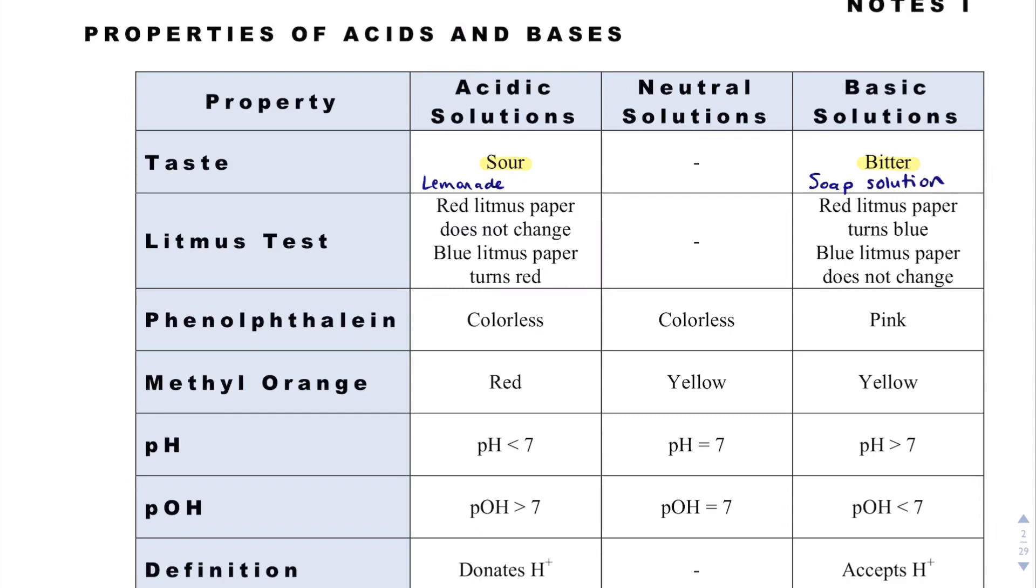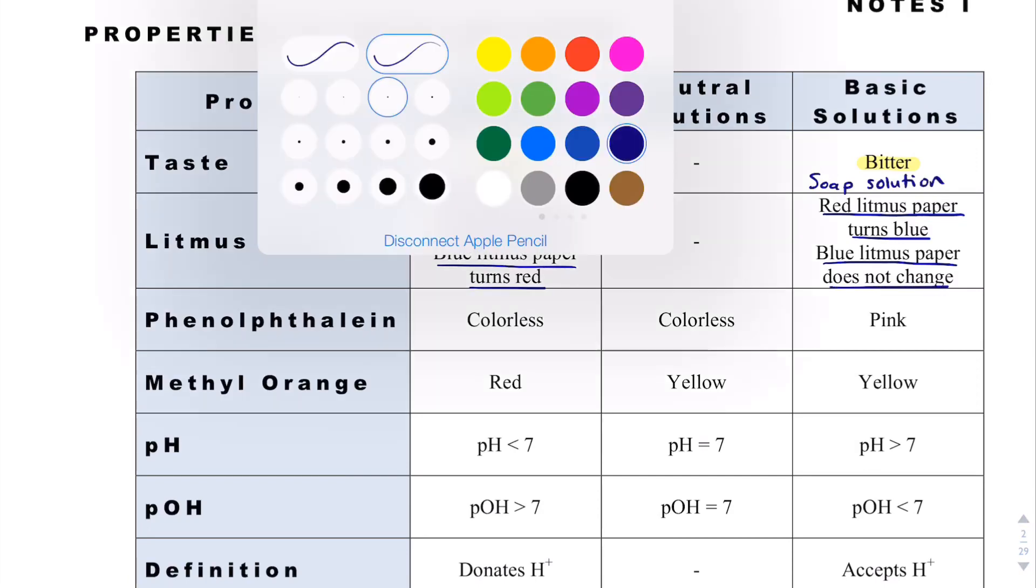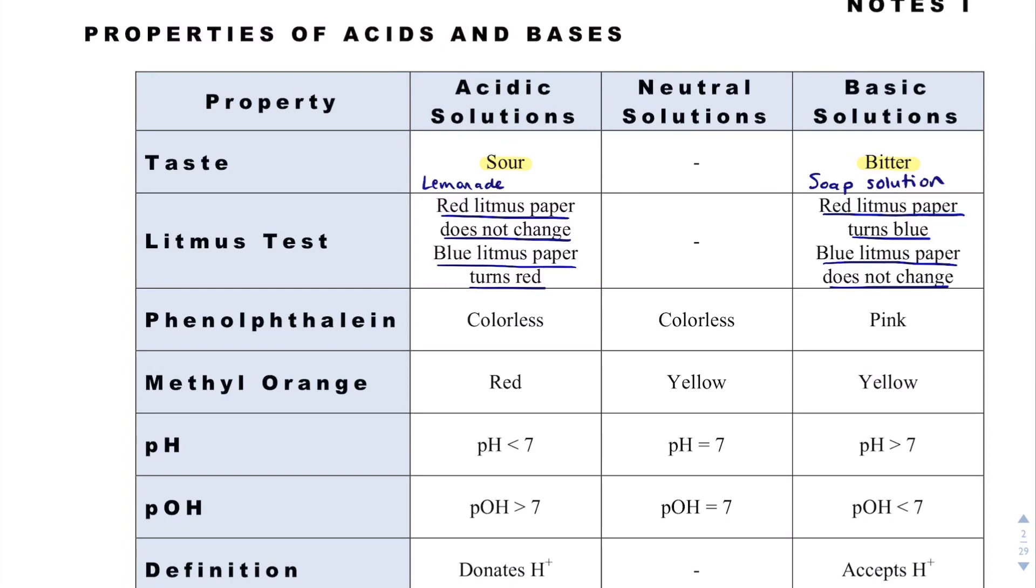With a litmus test, red litmus paper will not change under acidic solutions, but red litmus paper will turn blue under basic solutions. Blue litmus paper turns red under acidic solutions, where blue litmus paper does not change. A good way to remember this is acidic, as far as litmus paper is concerned, is going to be red, where basic solutions are going to be blue.